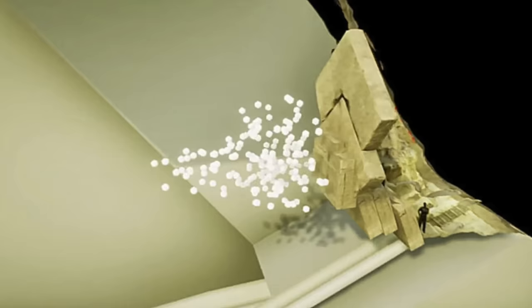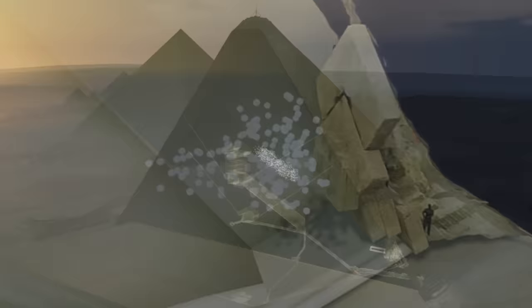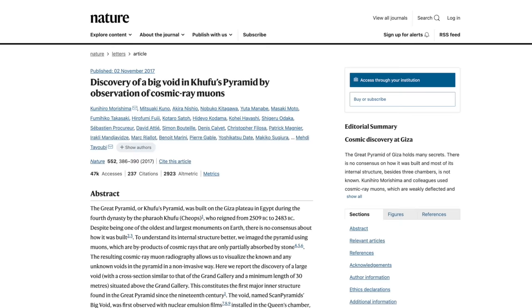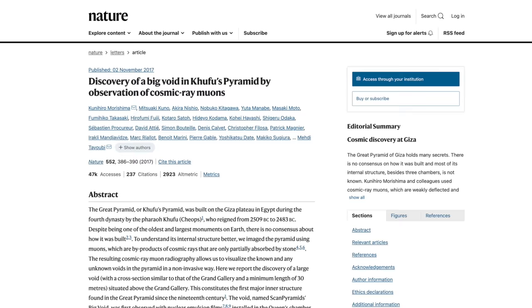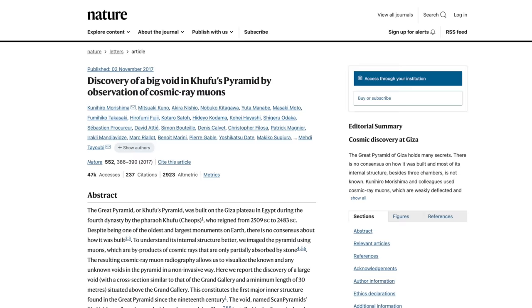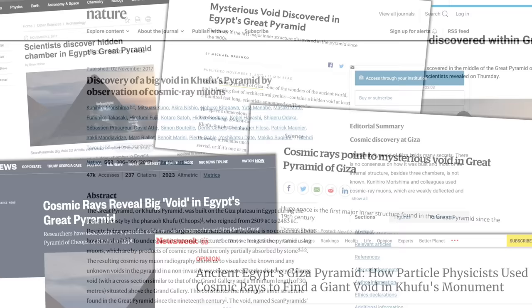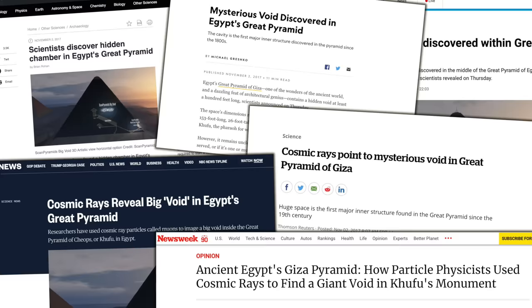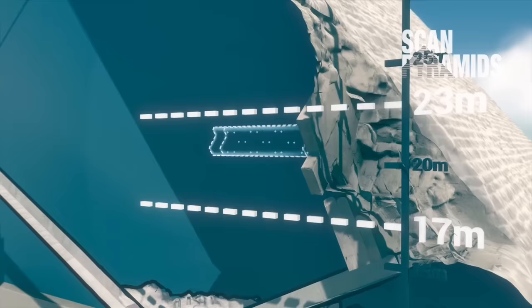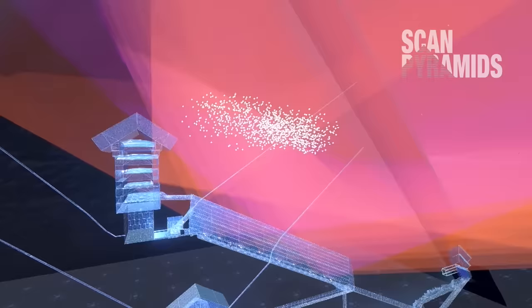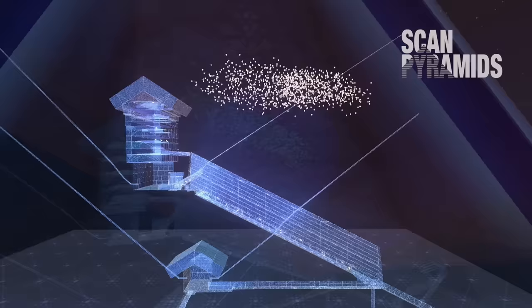But if the discovery of a small void was not exciting enough, a year later an even more incredible discovery was announced. On November 2, 2017, Nature published the latest findings from the Scan Pyramids project in an article titled Discovery of a Big Void in Khufu's Pyramid by Observation of Cosmic Ray Muons. It of course took the world by storm, as every major media outlet in the world jumped on the story. This wasn't a small room or 9-meter corridor. This void was 30 meters long. It's huge, and it's high up inside the world's most famous and most studied ancient structure.